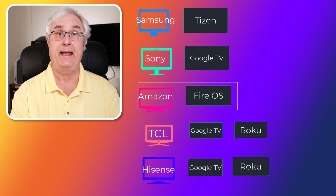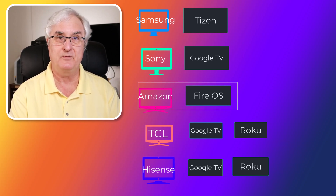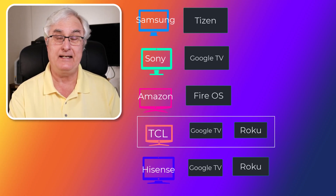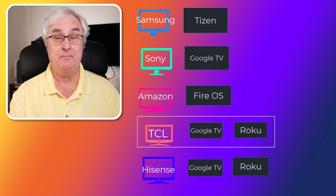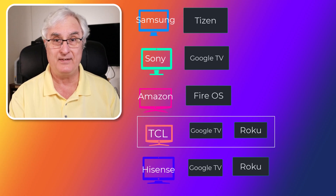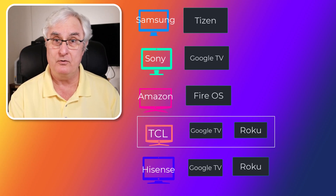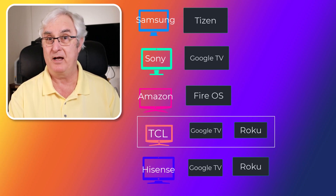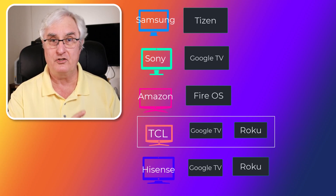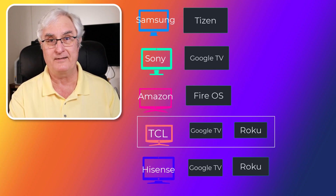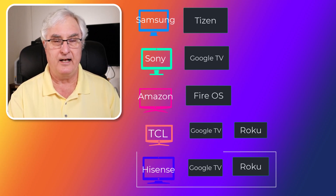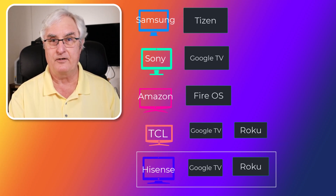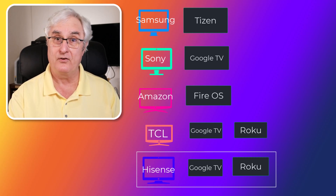For the Amazon TV, the OS is called Fire OS. Then we come to TCL, and here's where it gets interesting. TCL can have two operating systems depending on which TV you buy. You can have two identical TCL TVs and one will have a Roku operating system and the other will have a Google operating system. At Best Buy or Costco, looking at the same 55-inch TCL, you'll see on the box that it's either a Google TV or a Roku TV. Hisense similarly can have either the Roku or Google operating system.